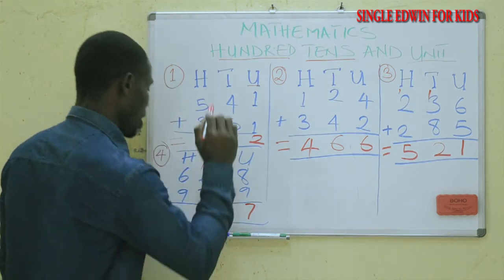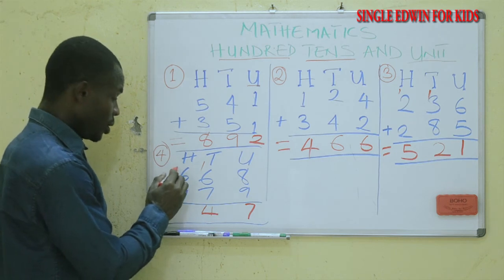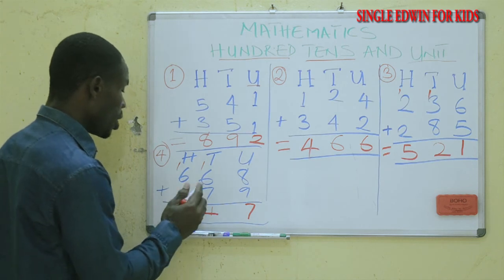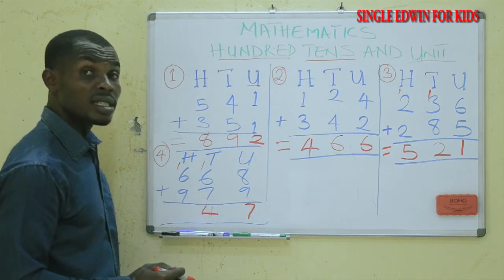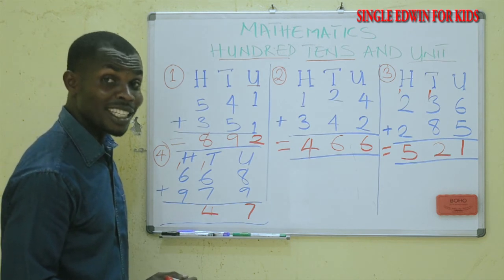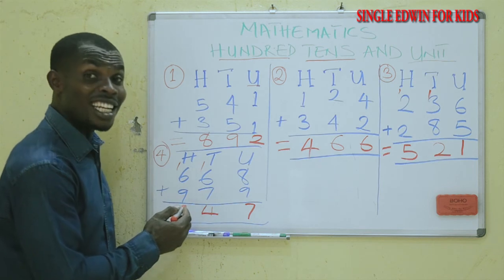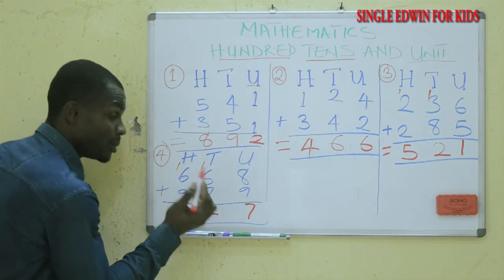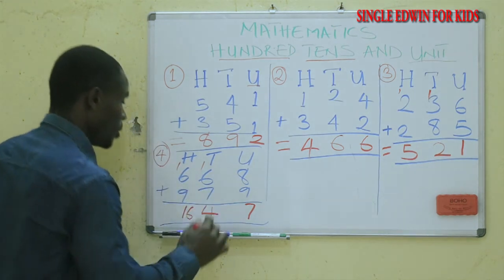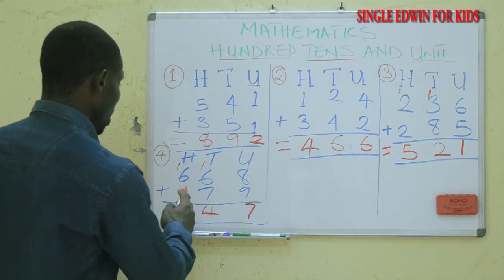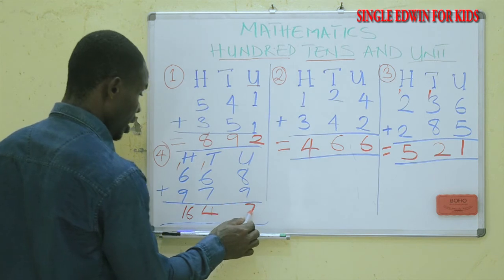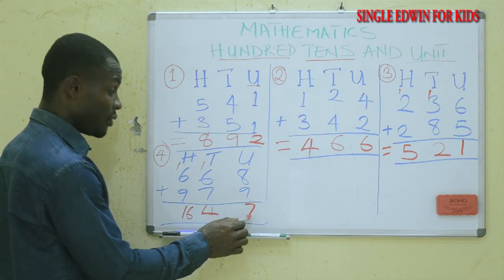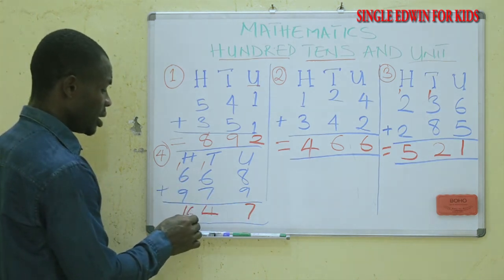You put one here. Six plus one is seven, and seven plus nine is sixteen. So the unit is seven, the tens is four, and the hundreds gives sixteen — making the final answer one thousand, six hundred and seventy-seven. Did you get me?